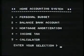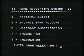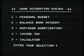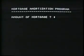Here we go — home accounting system. One: personal budget. Two: balance bank account. Three: mortgage amortization. That's what I'll try. Type three, enter.